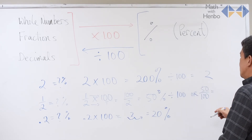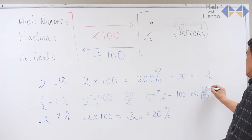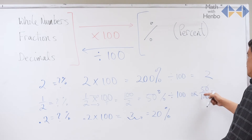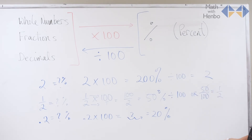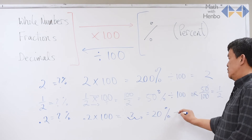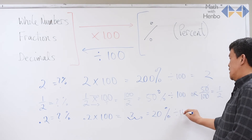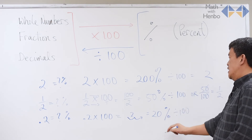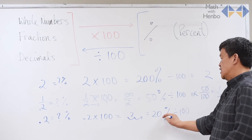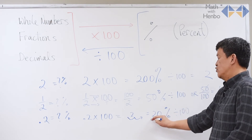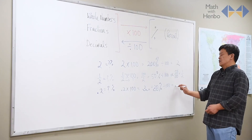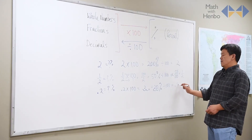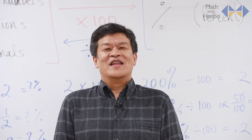And now you can already see: fifty over one hundred gives me one half. For the decimal, if I divide it by a hundred, I'm taking the decimal and moving two places to the left. So that gives me point two again.